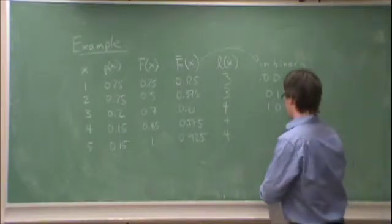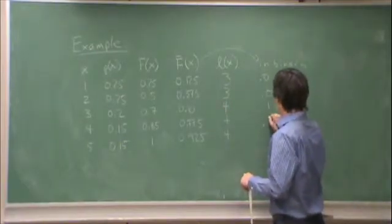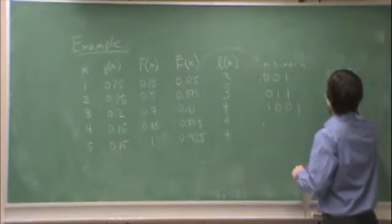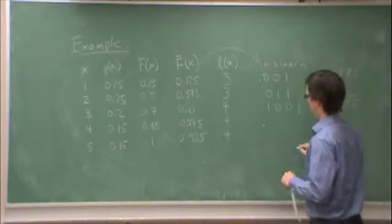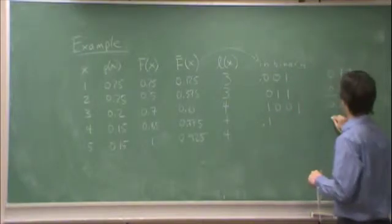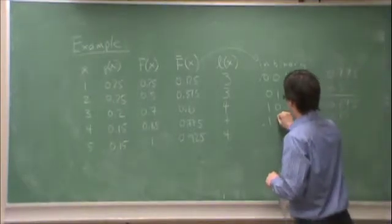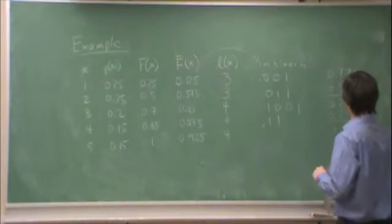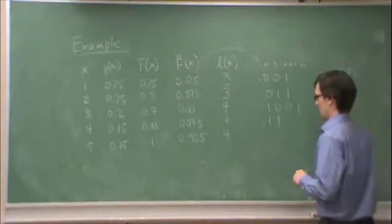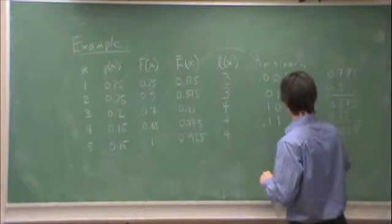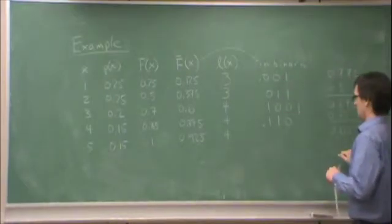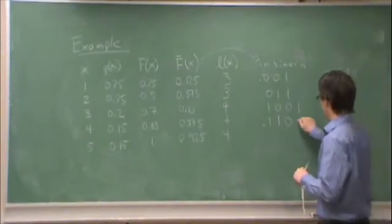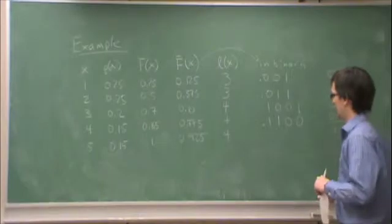Okay, 0.15. I have a 0.5, I have a 0.25, no 0.125s, and 1/16 is 0.0625 so I have 0 of those as well. And all I need is 4 bits.